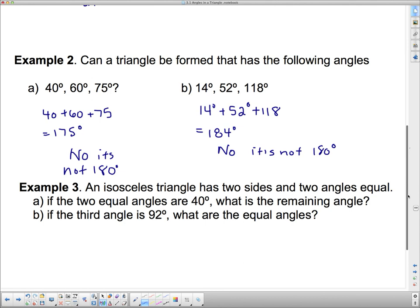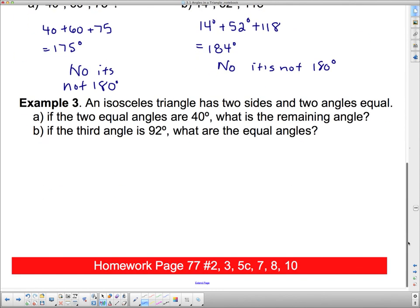Okay, the next example talks about an isosceles triangle. An isosceles triangle has two sides and two equal angles. So the first one: if the two equal angles are 40 degrees, let's actually draw that. It's much easier if you draw it. What is the remaining angle? Well, this one's pretty easy. I've got two 40-degree angles and one up here, so by angle sum of the triangle theorem, I add up 40 plus 40 and then subtract it from 180, which means that the remaining angle is 100 degrees.